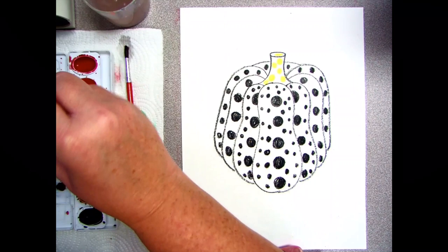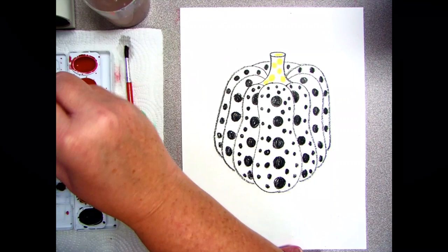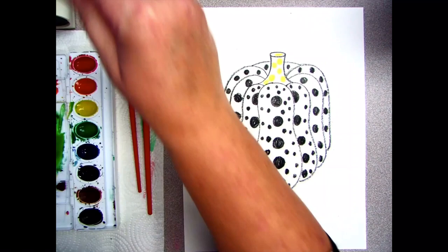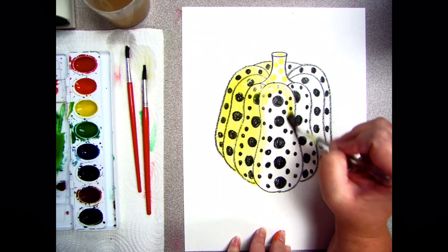Now that my pattern is done on my pumpkin and on the background, I am ready to paint. I'm going to choose a color that will contrast with the colors I've already used. I will paint a watercolor resist right over top of my drawing.